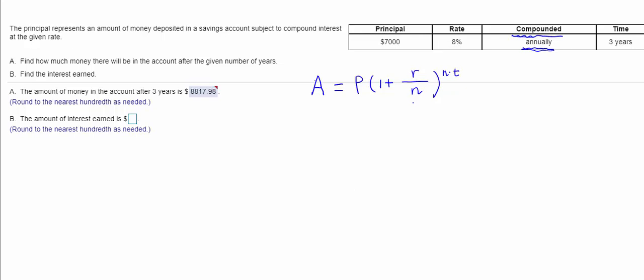The only new component here is n. The n is the number of times the interest is calculated per year.